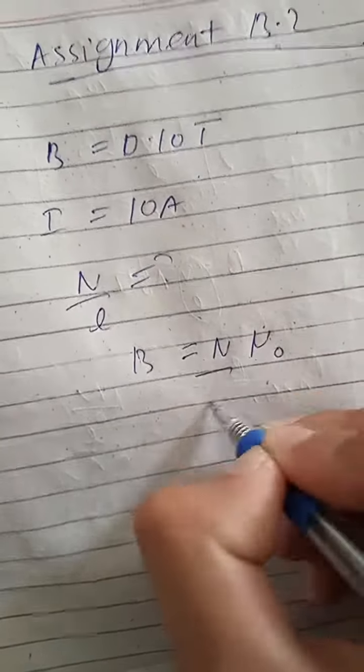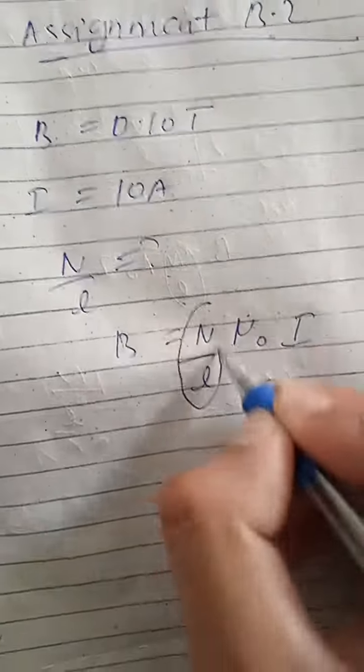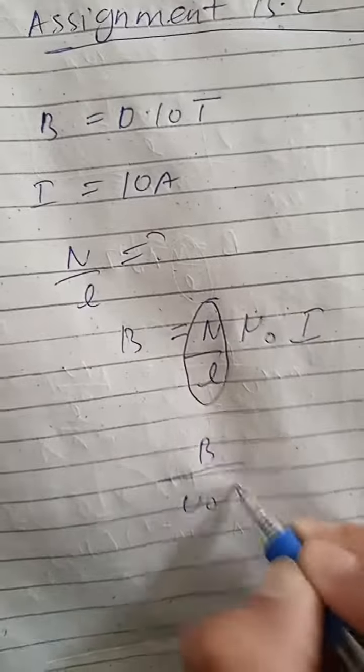Turns per unit length we will find. So B is the formula. B is equal to μ₀ N over L times I, and turns over length and current view so this will be here.